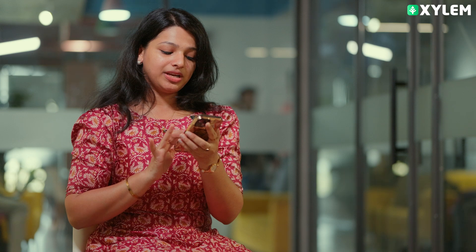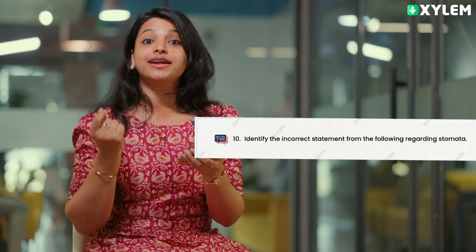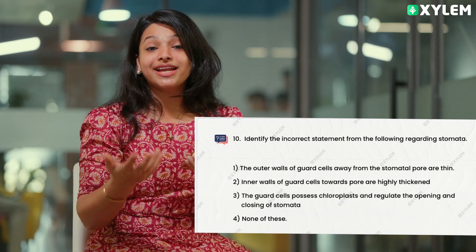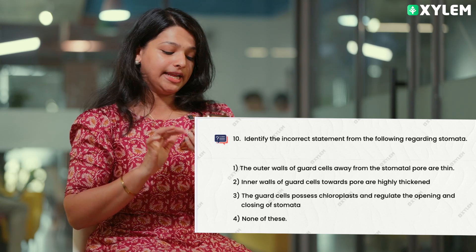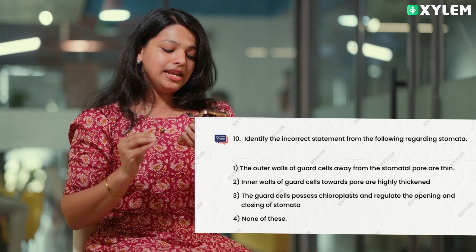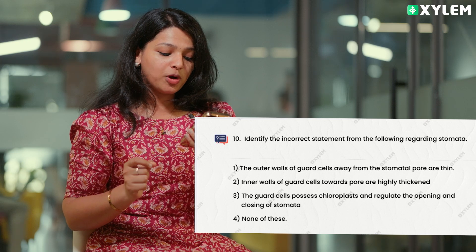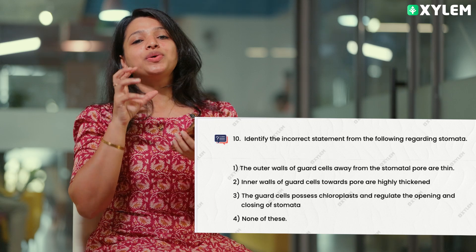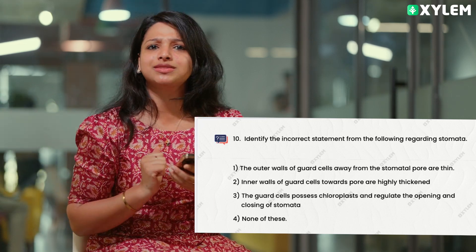This is an important question: identify the incorrect statement from the following regarding stomata. The outer walls of guard cells away from the stomata pores are thin. Inner walls of guard cells towards pores are highly thickened. The guard cells possess chloroplast and regulate the opening and closing of the stomata. None of these — these are all correct statements.